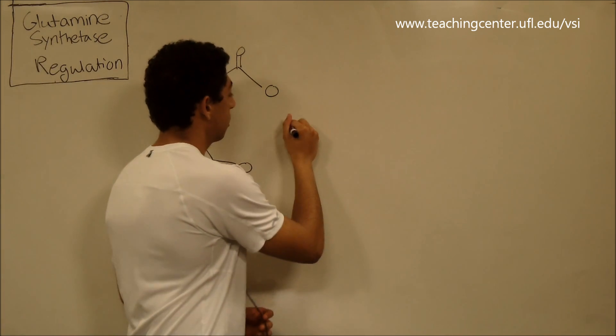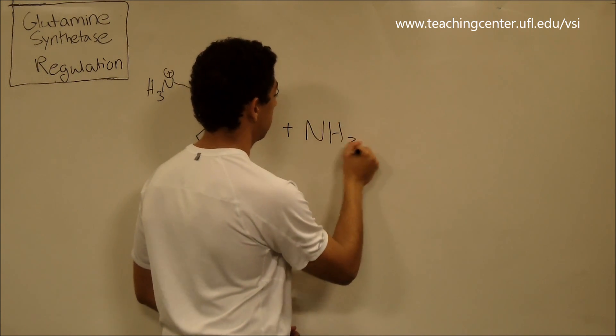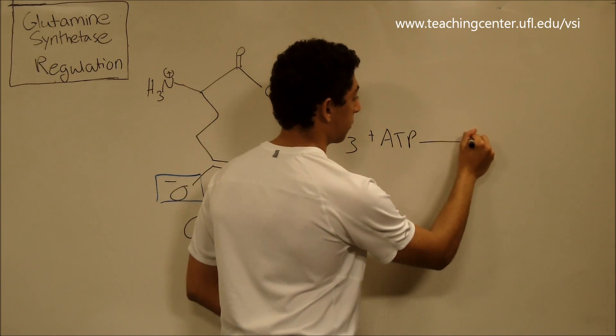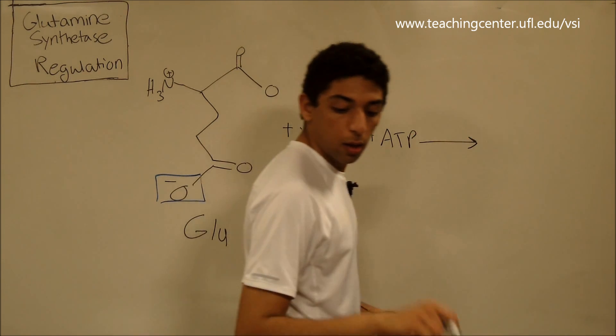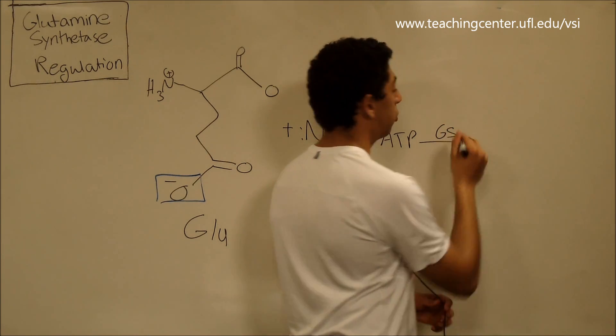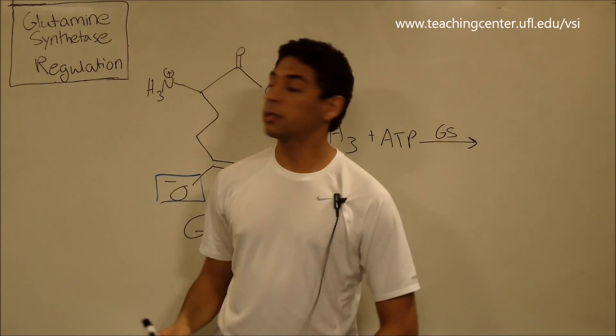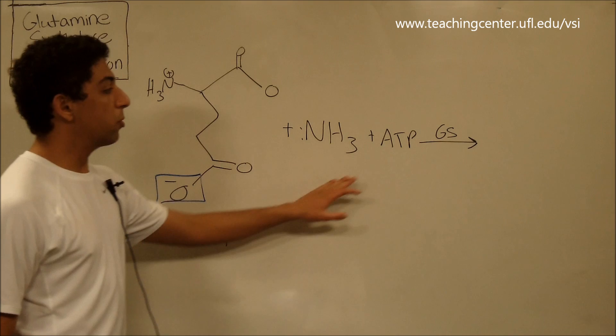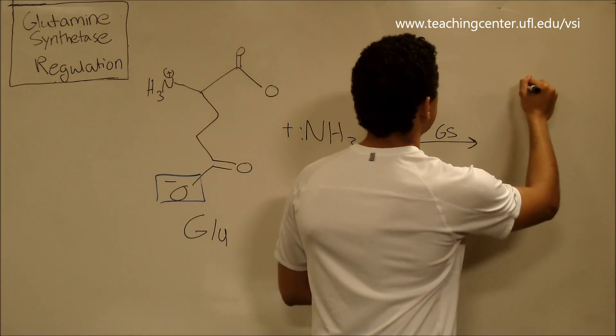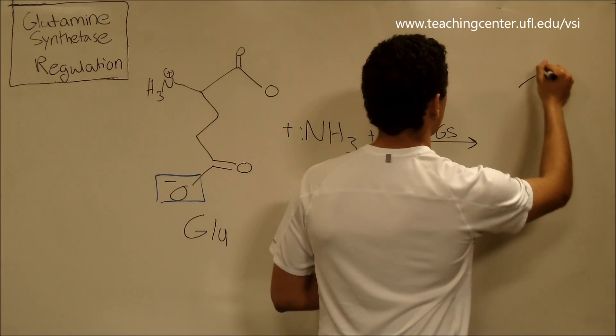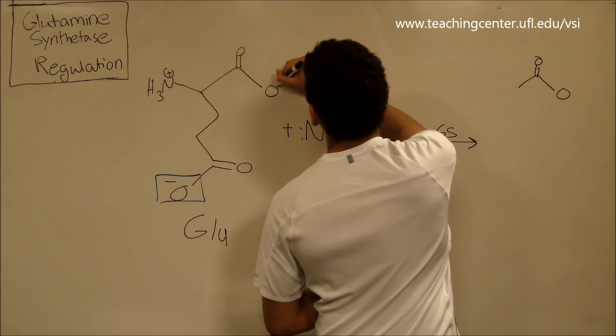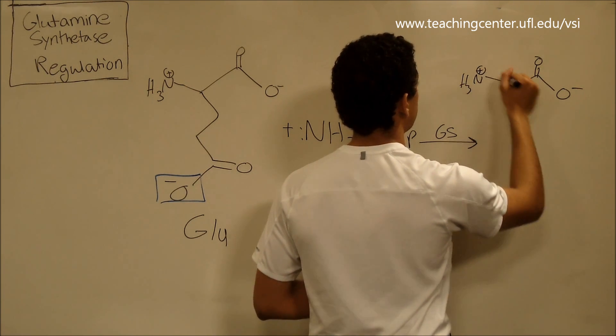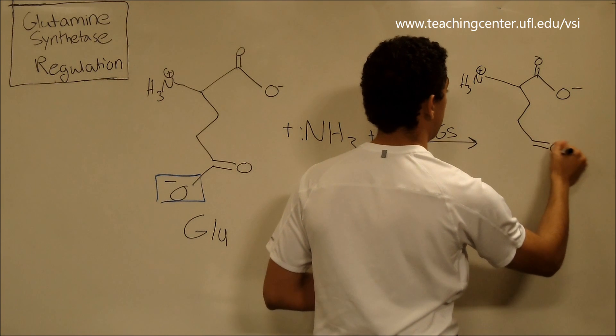Next, this glutamate combines with ammonia and ATP. And the enzyme is glutamine synthetase, the one we're talking about today. So glutamine synthetase takes glutamate, ammonia, and ATP and makes it into glutamine.